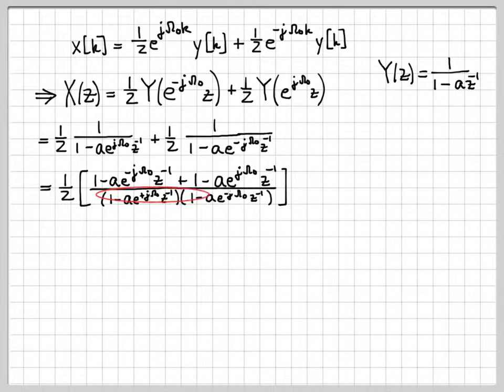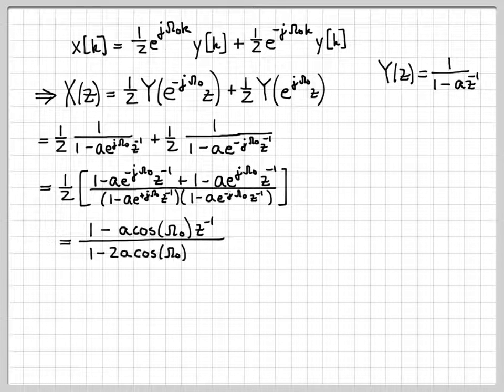Similar things happen on the denominator. If I multiply everything out, I can get a cosine. The numerator turns into 1 - a cos(ω₀)z^(-1), and the denominator turns into 1 - 2a cos(ω₀)z^(-1) + a²z^(-2).